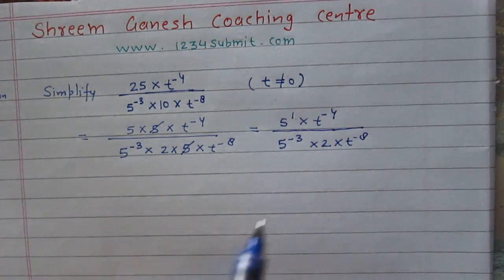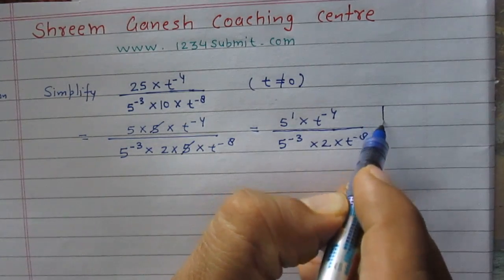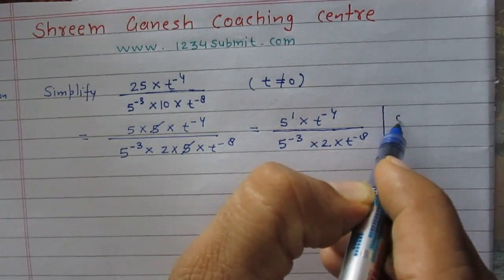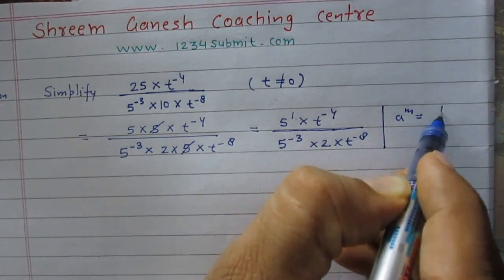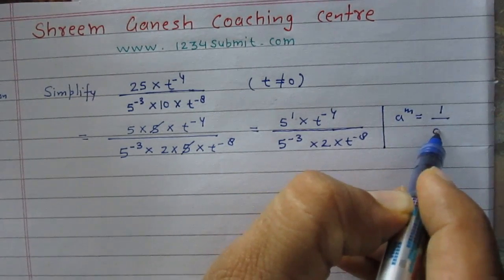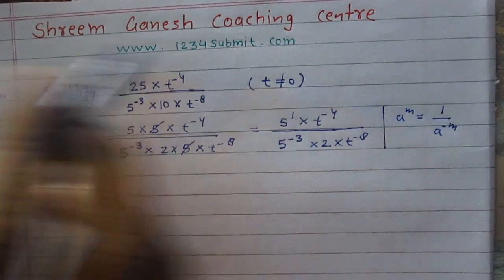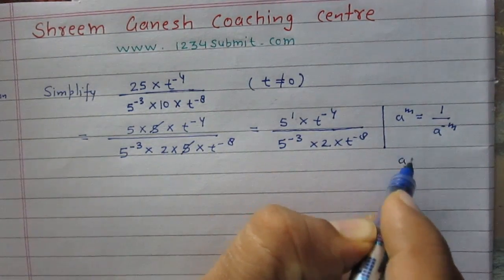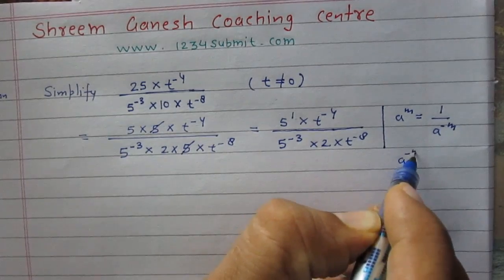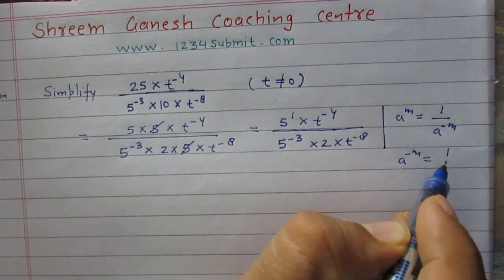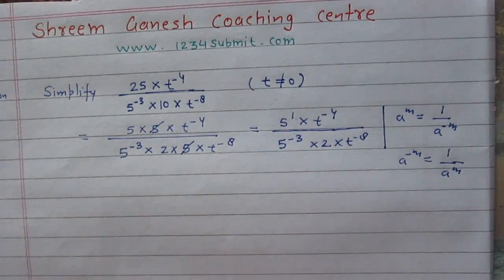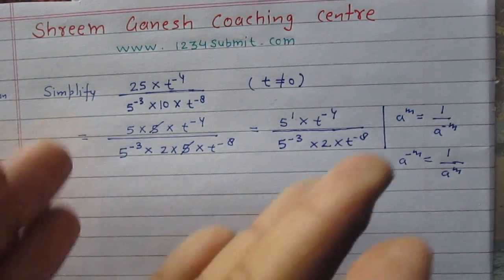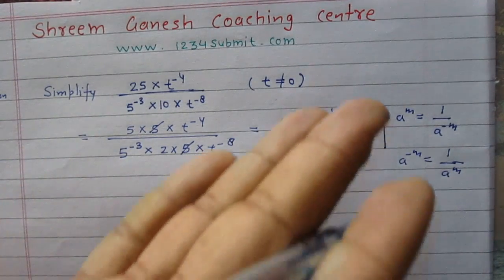I want to discuss with you a rule. a raised to power m is equal to 1 upon a raised to power minus m. Similarly, a raised to power minus m is equal to 1 upon a raised to power m. You can express one rule in these two ways.